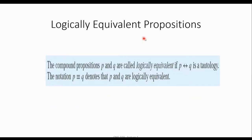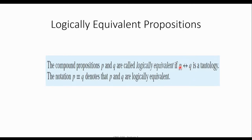What do we mean by saying logically equivalent propositions? The compound propositions P and Q are called logically equivalent if we have such a relation between them, and this relation should be a tautology — it means it should always give you truth values at the end. When we have such a biconditional case, you remember from the previous session that if P is true then Q should be true, if P is false then Q should be false. It's not possible that P is true and Q is false, and vice versa.